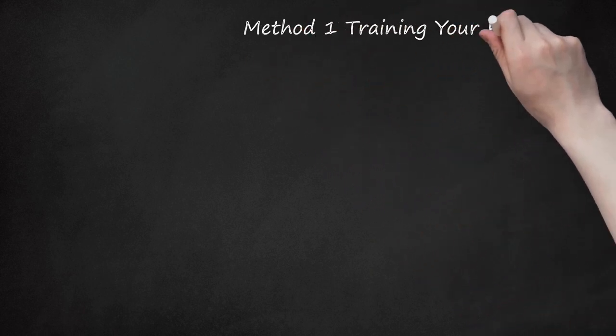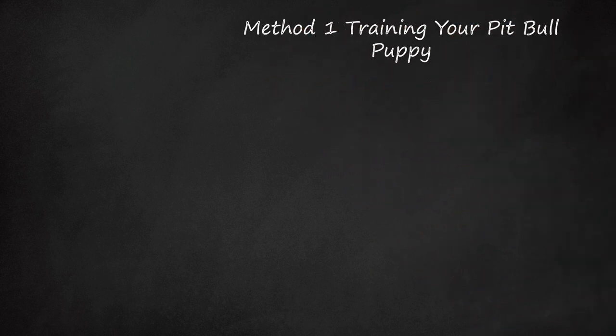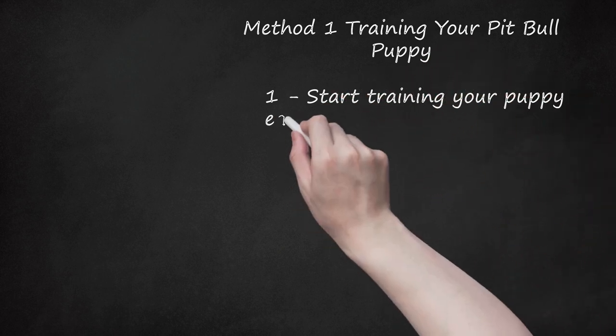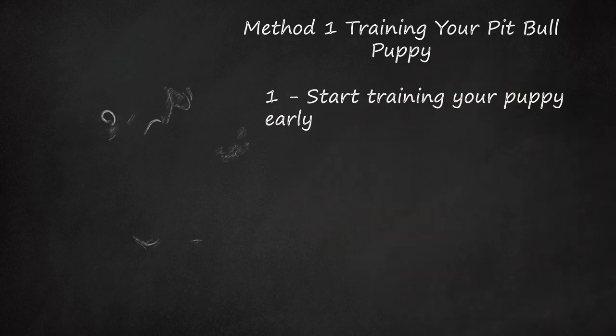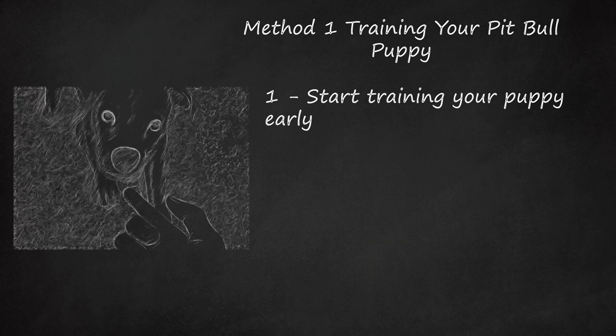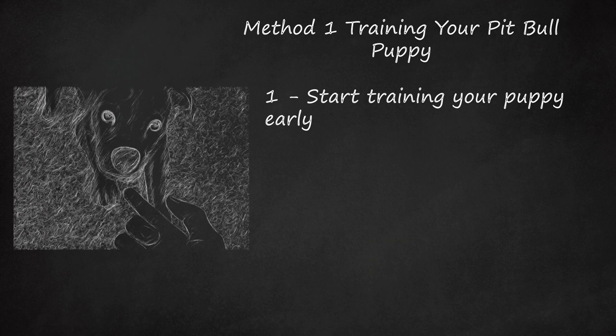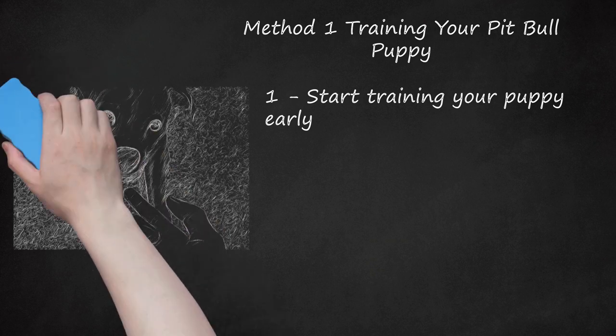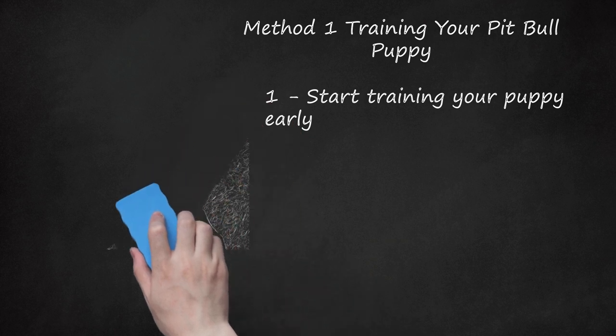Method 1: Training Your Pit Bull Puppy. Start training your puppy early. You should begin reading up on training your pit bull before you get him. This way, you can immediately train and socialize your puppy once you bring him home. If you get your puppy from a good breeder, the breeder might have started socializing your pit bull. Consider hiring a qualified, experienced dog trainer to interact and teach your dog manners.